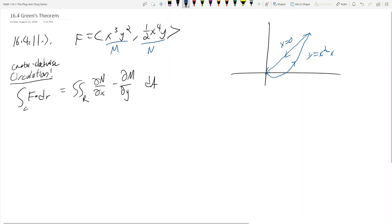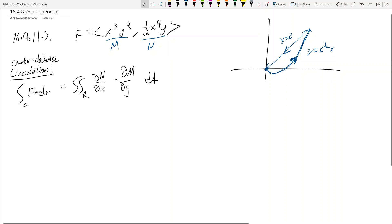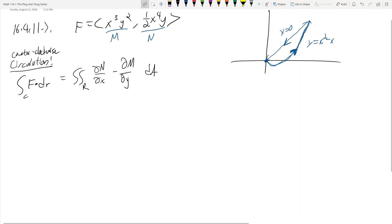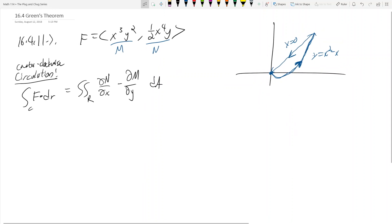This gives us the counterclockwise circulation. So that means we would get the circulation if we went around this way, exactly in the direction my arrows are pointing. I know for a fact that on some previous final exam problems, they're going to ask you for the clockwise circulation. We'll get to what happens if your circulation is clockwise.